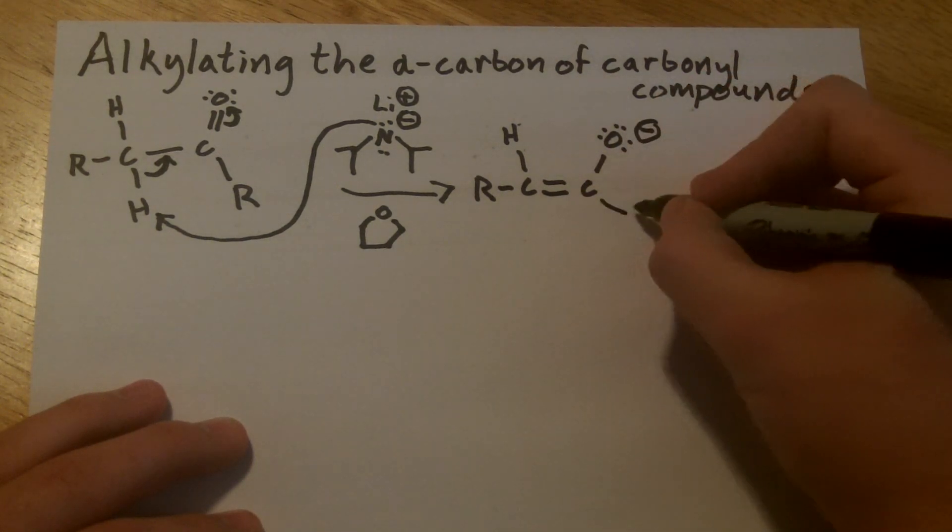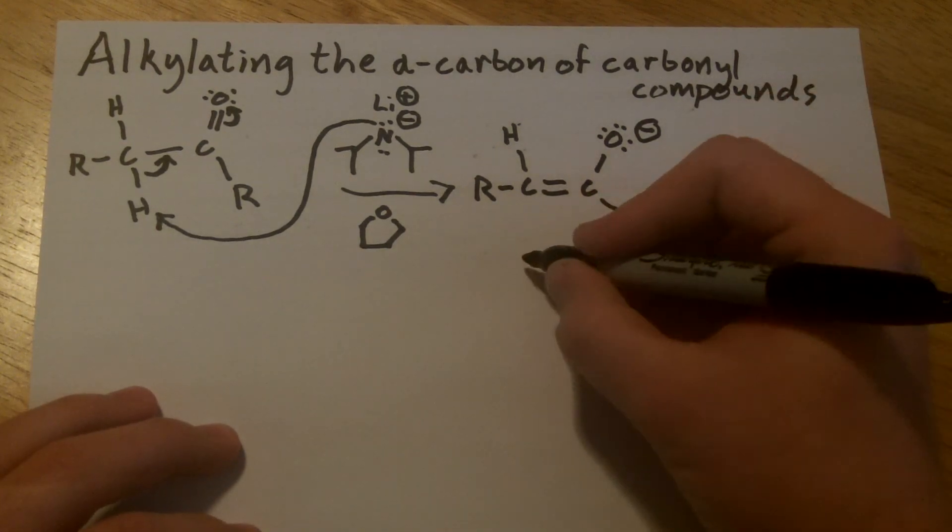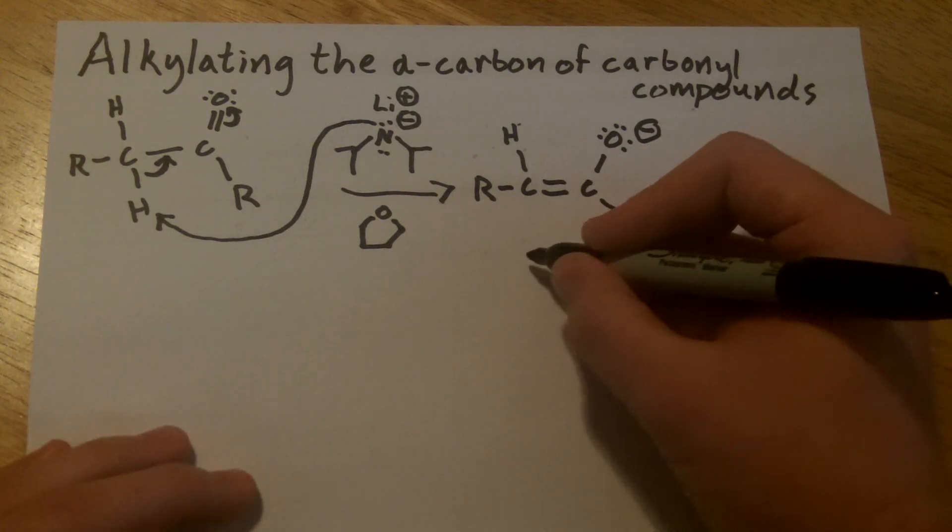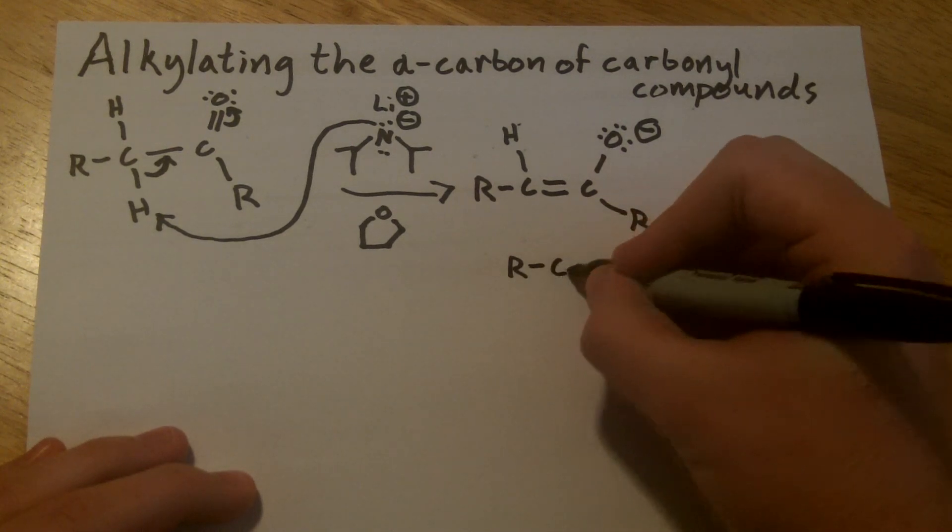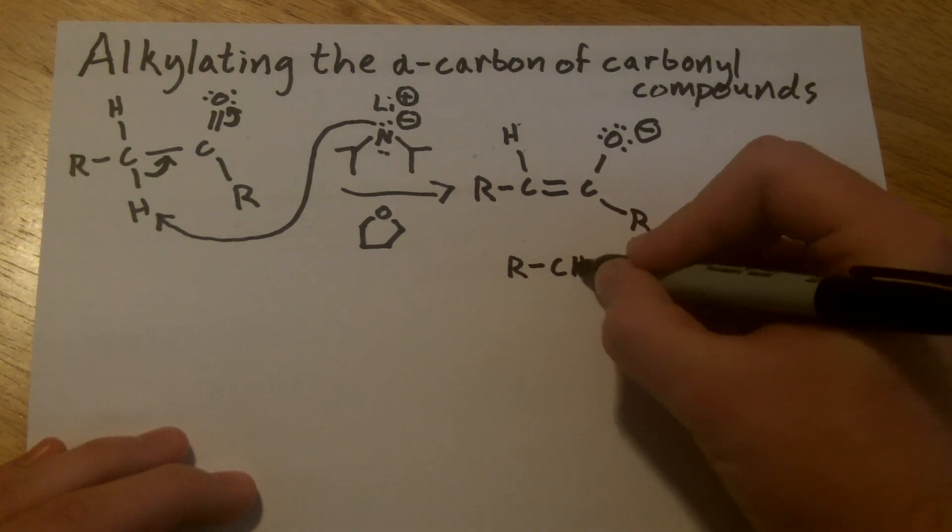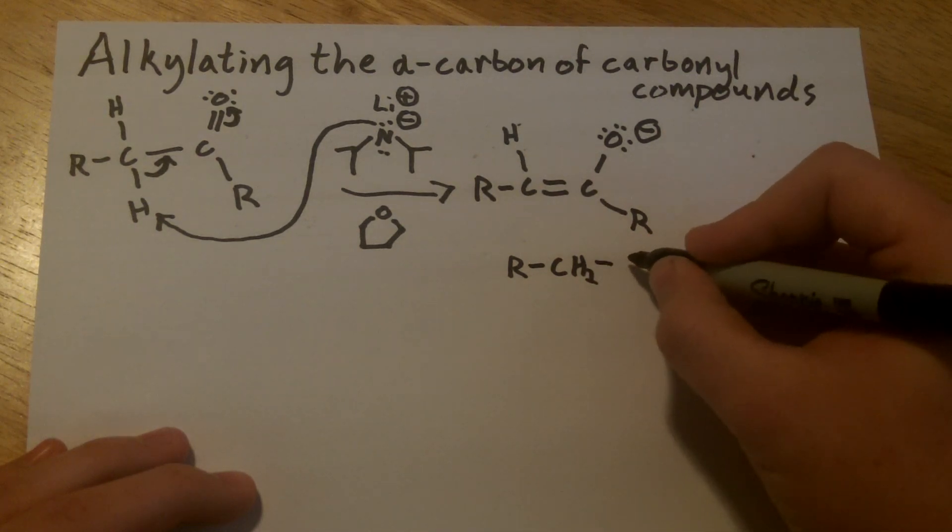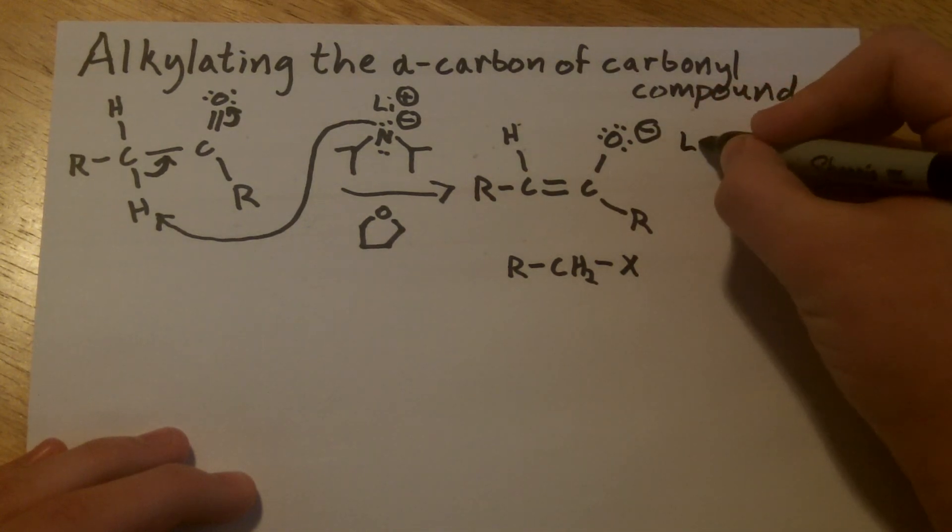Okay, and there is our enolate ion. So the second step is actually the addition of the alkyl group that you're wanting to add. So R just means remainder, it can be whatever you want it to be. It could be a ring, it could be a chain of carbons, just pretty much anything.